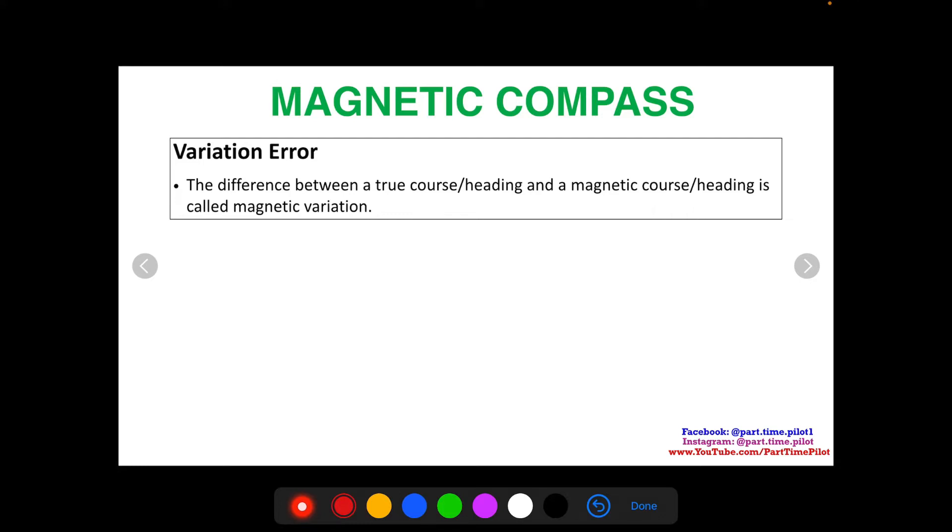The difference between a true course or heading and a magnetic course or heading is called the magnetic variation. So when we want to go from true direction to a magnetic direction, the same goes for winds. It doesn't have to be a course or heading.